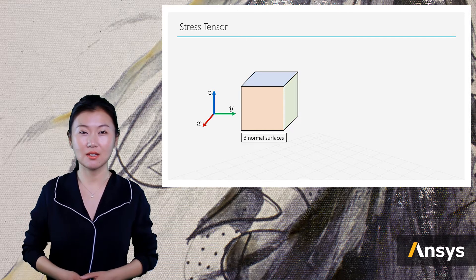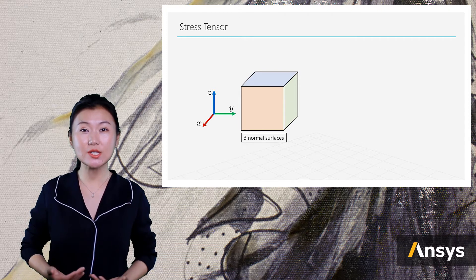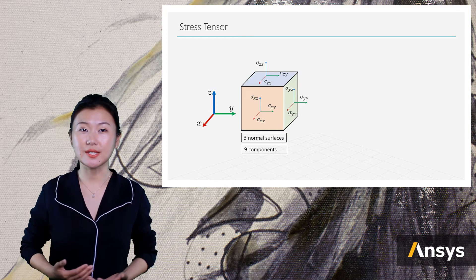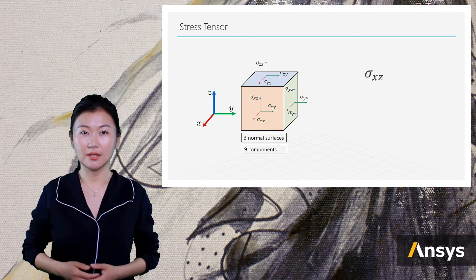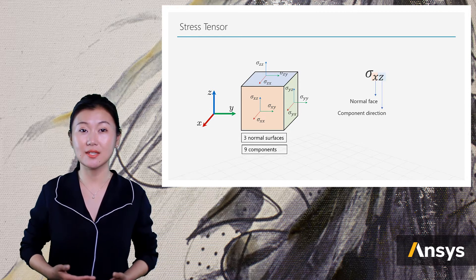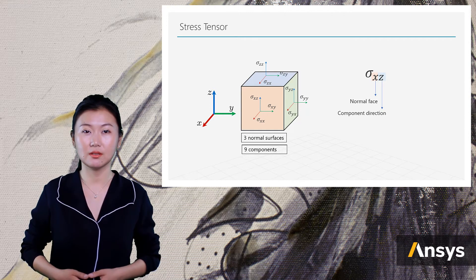On each of these faces there are three stress components in different directions. Note the two indices of these components. Here, the first index represents the normal face and the second index represents the direction of the component.